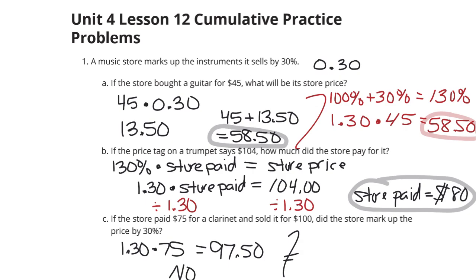Additionally, if I were to take 100 and divide it by 75, that means it was marked up 133%. So, it's actually a 33.3% markup here. It's a couple different ways of going about to get to that solution of no, that's not equal to 30%.